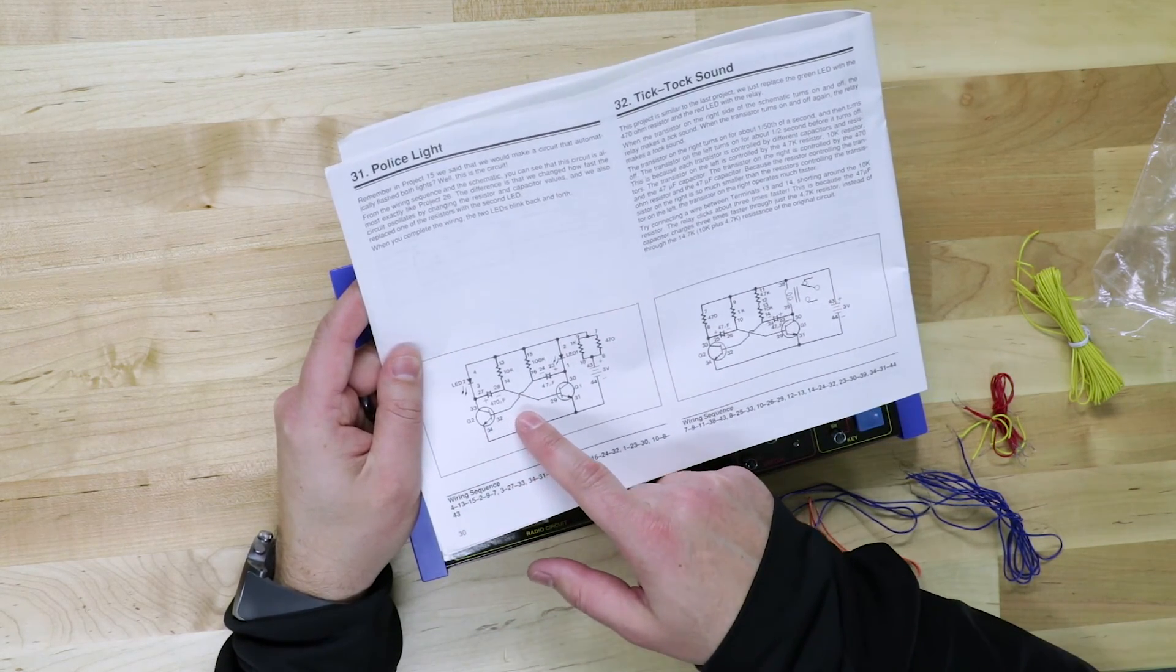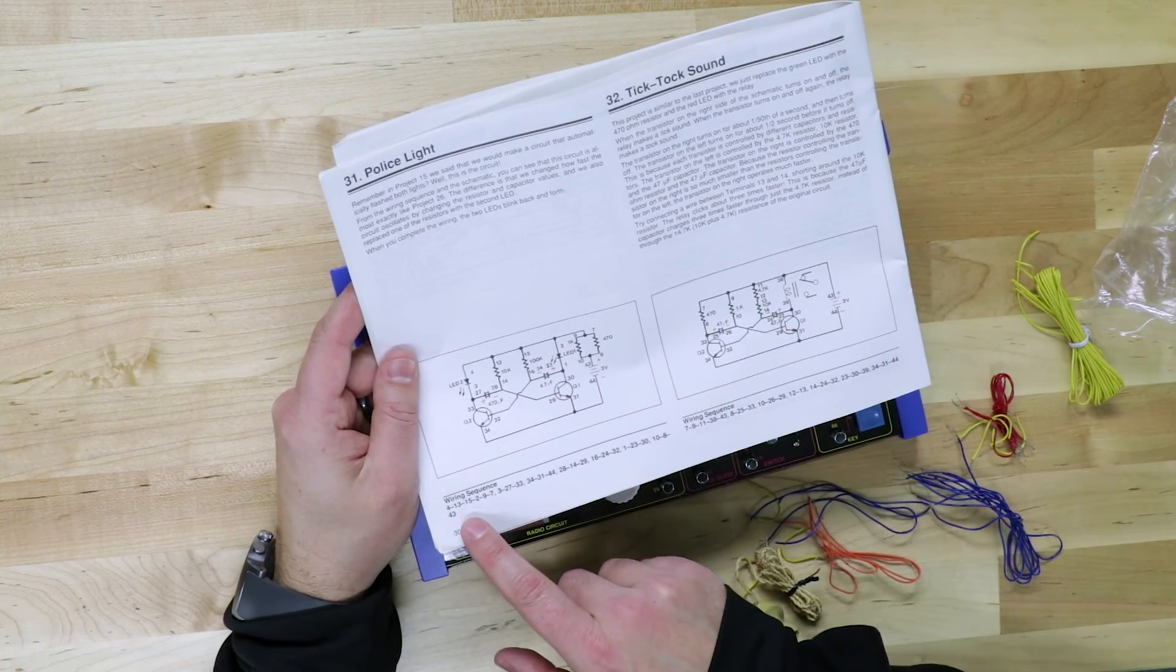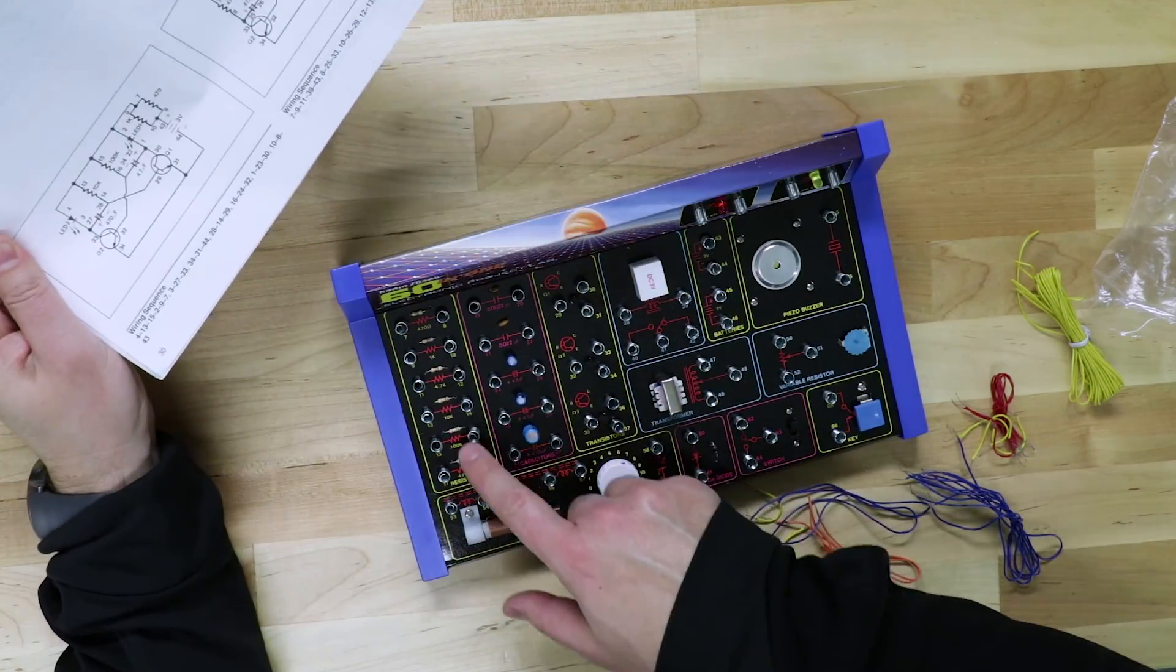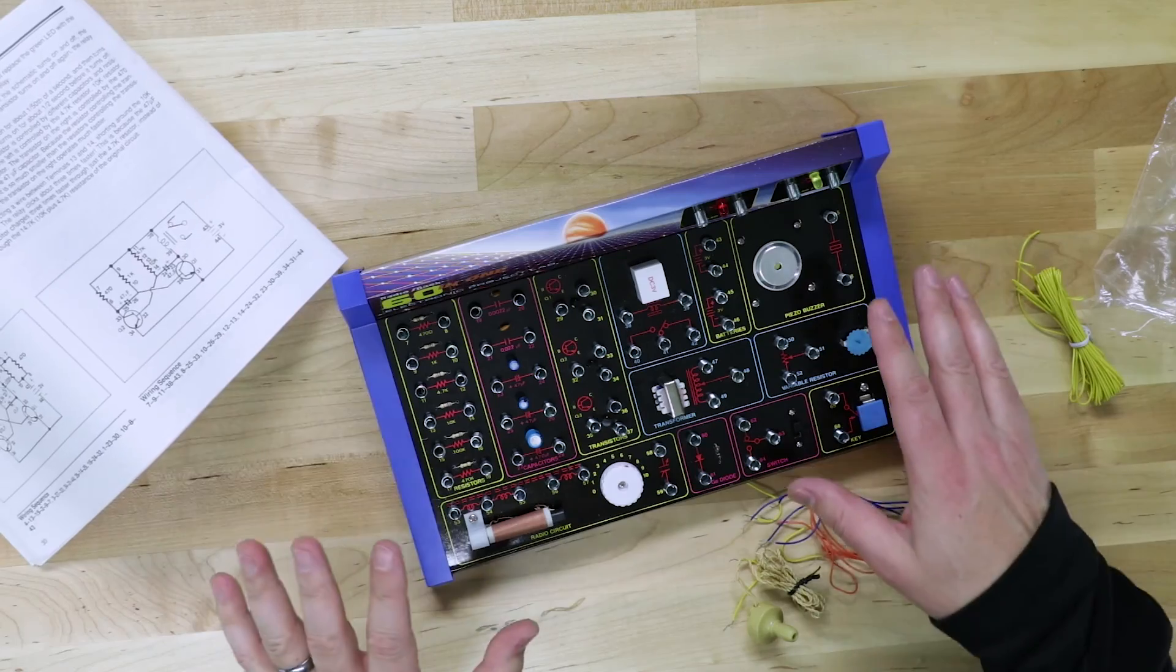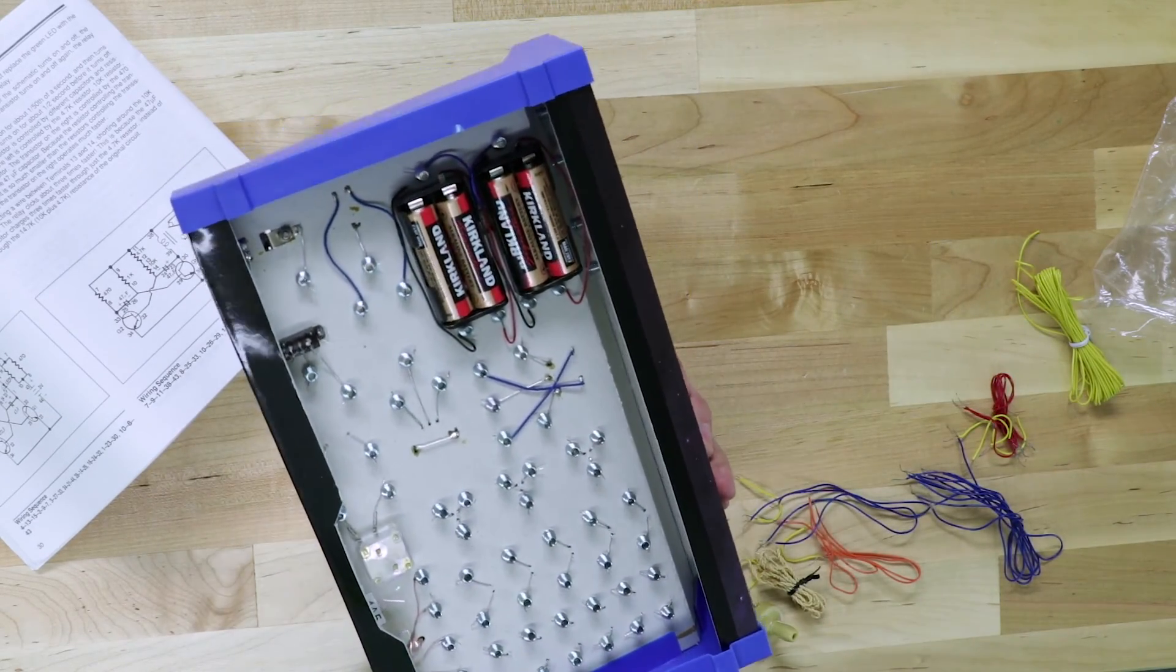So this is obviously really confusing to look at, especially if you are new to this, but giving you the wiring sequence definitely makes it much easier. And all of these are numbered as well. So this definitely takes a couple of batteries. And, oh, it actually has batteries in it. That's cool.